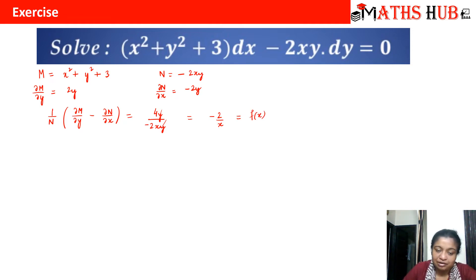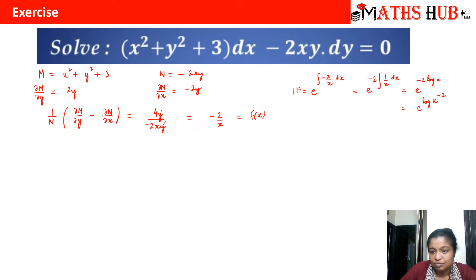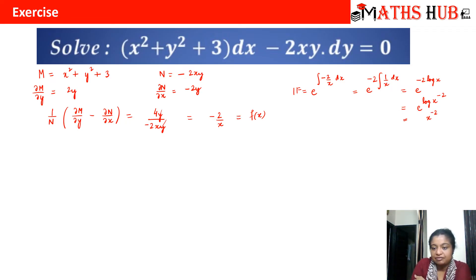According to our rule, the integrating factor is e raised to power ∫f(x) dx, which is ∫(−2/x) dx. We can write this as −2 times ∫(1/x) dx, giving e raised to power −2 log x. Taking −2 as an exponent, that becomes e raised to power log(x^(−2)). Since e and log are inverse functions, the integrating factor is x^(−2).